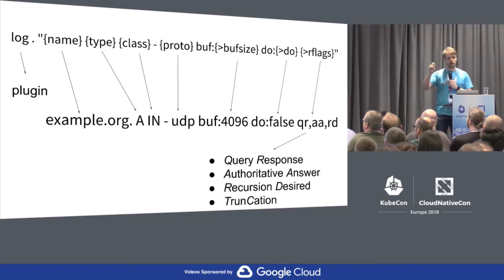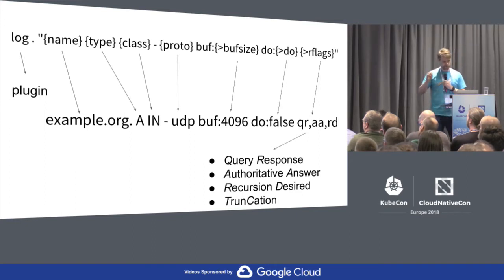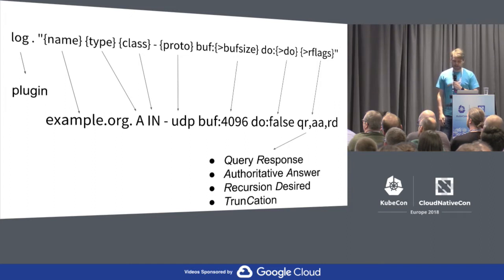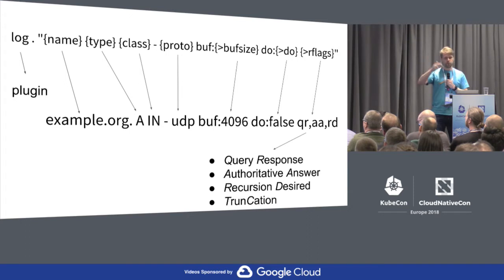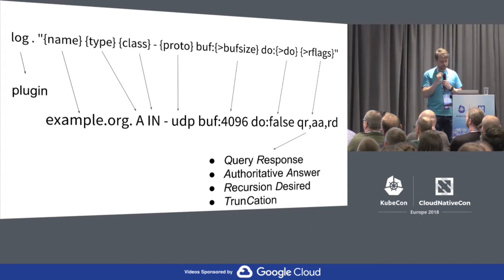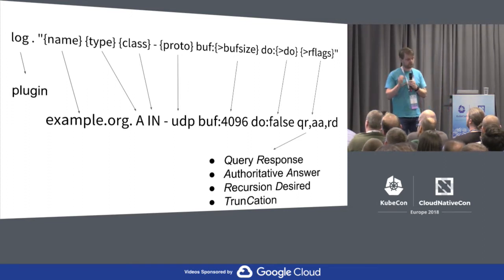The DO bit — I should have removed that because it's pretty useless here. And the flags that we send back: QR means query response, AA is authoritative answer, RD echoes back what the client wants — recursion desired, not that important. And the one I didn't show is TC, which says truncation: it doesn't fit, you need to do something else.